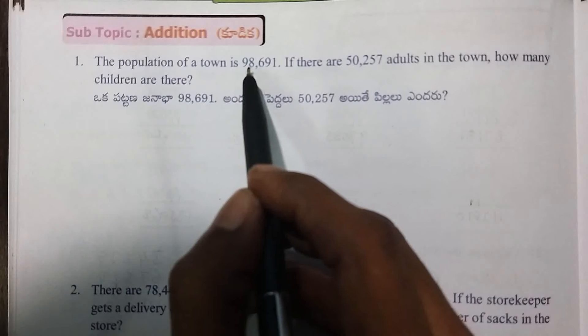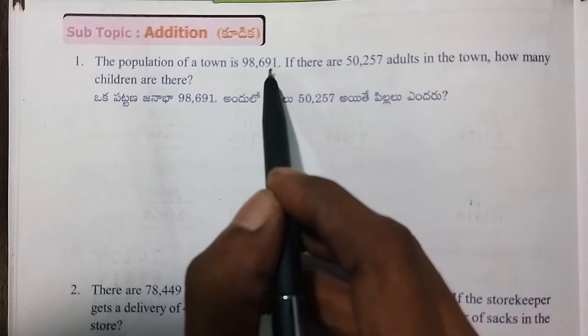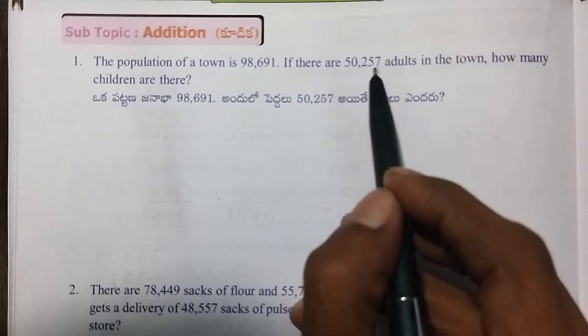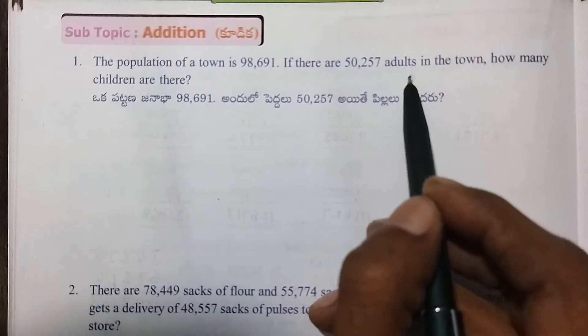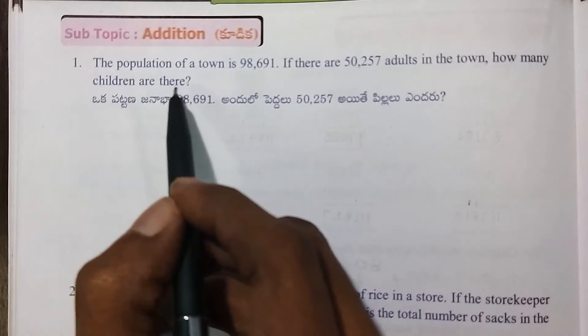The population of your town is 98,691. If there are 50,257 adults in the town, how many children are there?